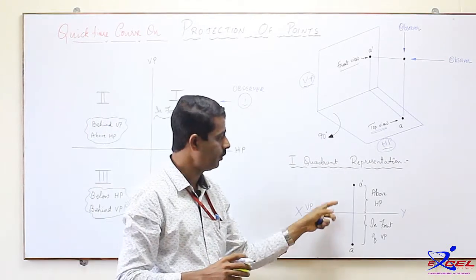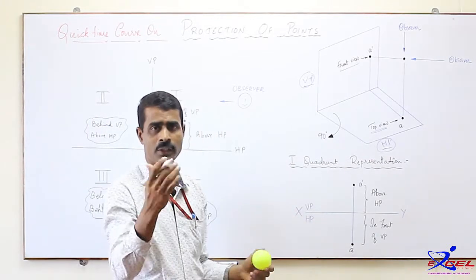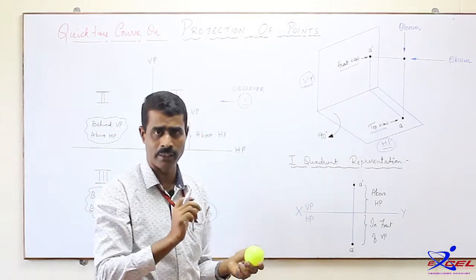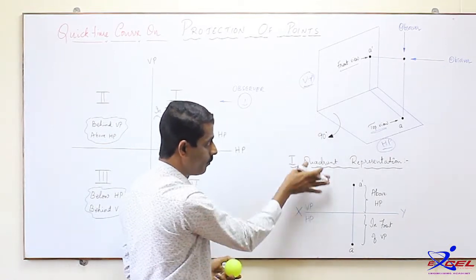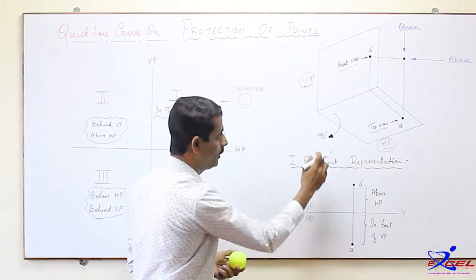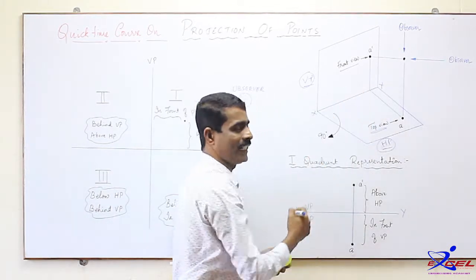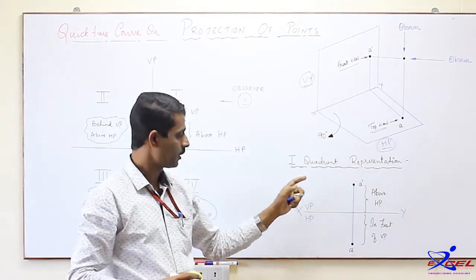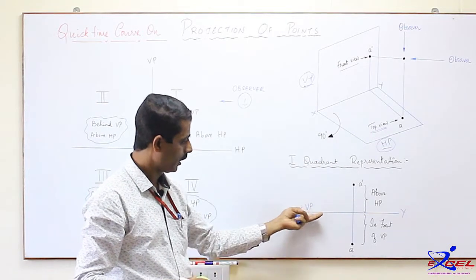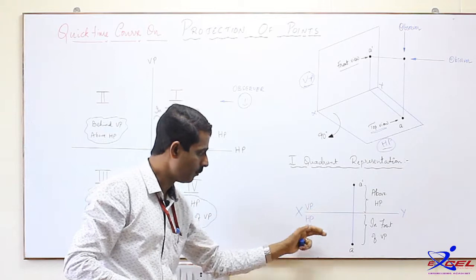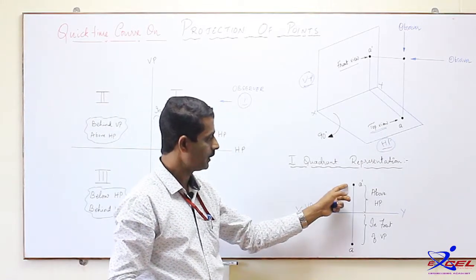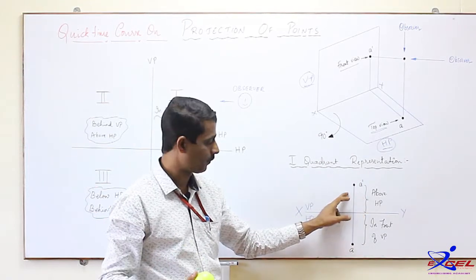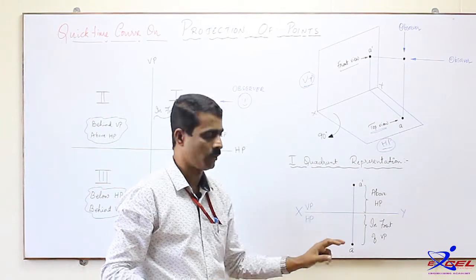If we want to draw those two views together on a single plane, what we need to do is rotate the horizontal plane 90 degrees clockwise, so that both planes will be in the same plane. VP and HP are separated by the XY line — the intersection of VP and HP. Above XY the space is VP; below XY it is HP. The front view is A dash and the top view is A. The distances that matter for the front view and top view are above HP and in front of VP respectively.